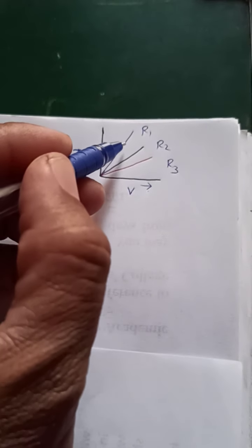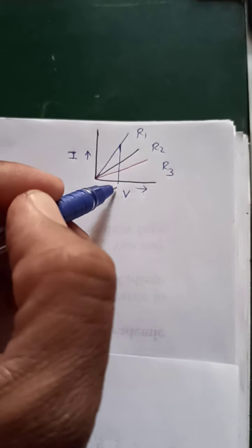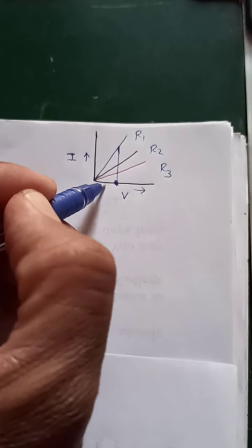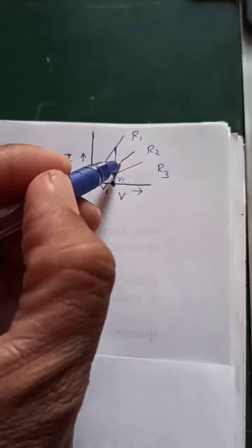First of all, you can draw a line parallel to the X-axis. This is the simplest method to find the answer. You can see that, suppose we consider this is the potential V1, so every point on this line will have potential V1.